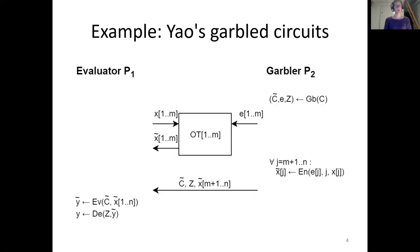A famous example is Yao's Garbled Circuits approach, which was actually the first protocol in this setting. It's a two-party computation protocol, so we have two parties P1 and P2 holding private inputs x1 and x2, and they want to compute a public function f. In this protocol, the parties take on two different roles: an evaluator and a garbler. The protocol starts with P2, who is the garbler. We assume the function f is represented as a Boolean circuit, which we call C.